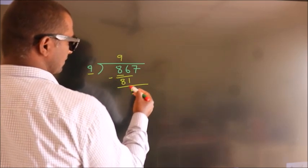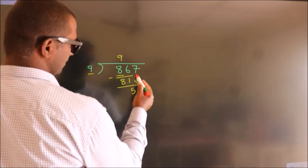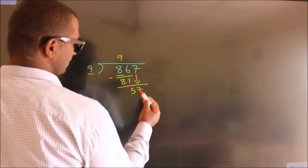After this, bring down the beside number, so 7 down, so 57.